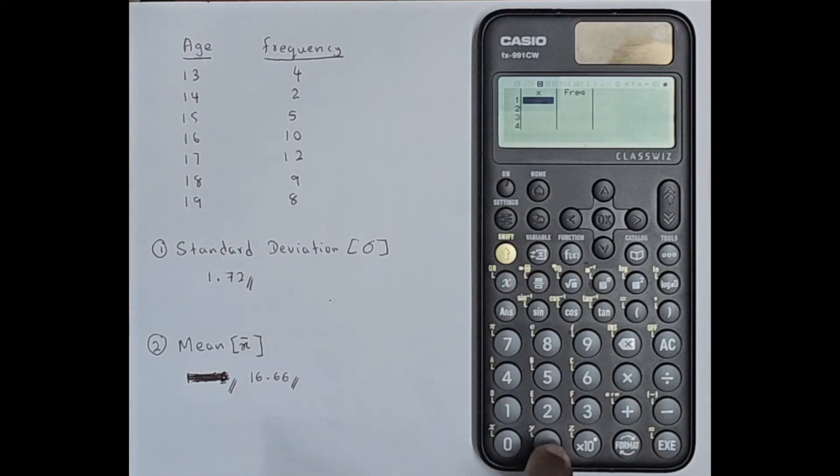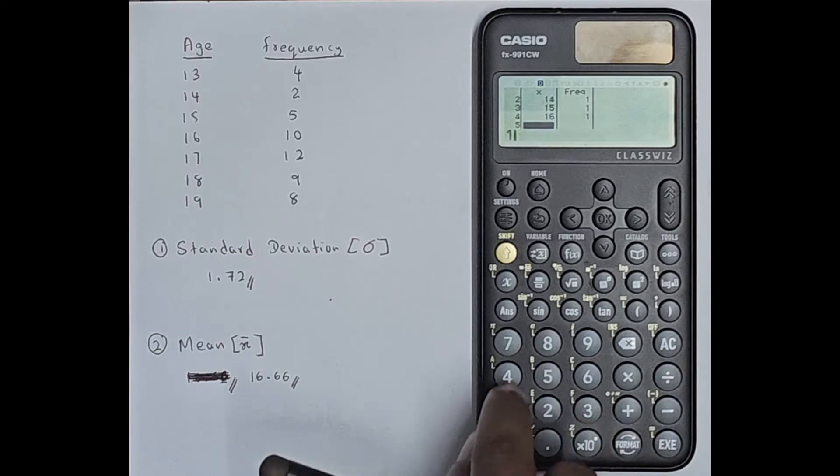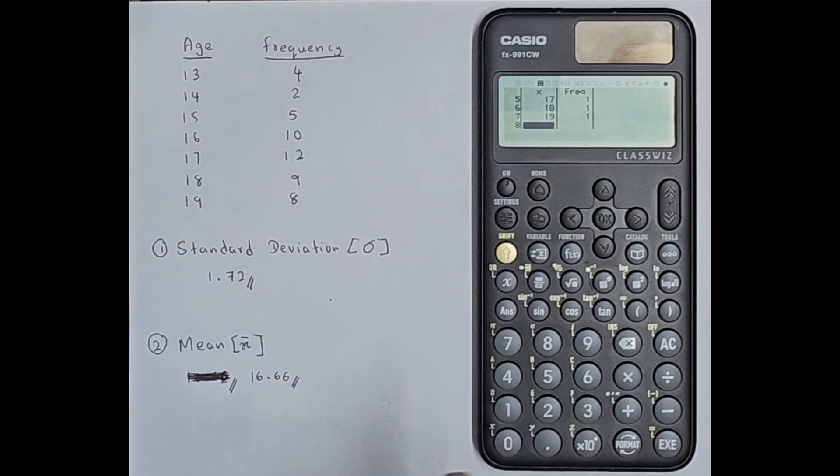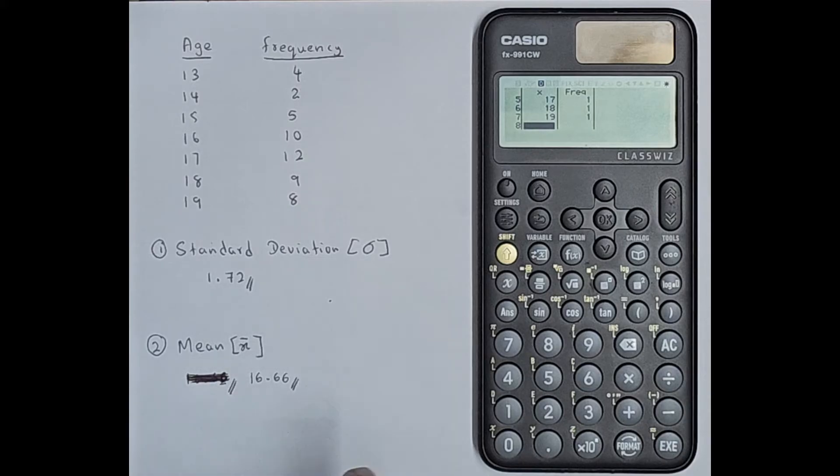Now we can enter the values: 13, press this exe, then 14 exe, 15 exe, 16 exe, 17 exe, 18 exe, 19 exe. Make sure to enter exe once you are done with the last data.